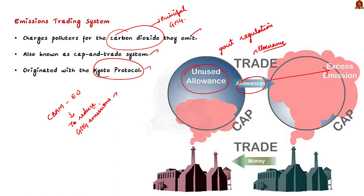This baseline level of pollution will be reduced annually by the European Union countries. Currently, the price of those permits is nearly $60 per tonne. This gives European companies a strong incentive to cut greenhouse gas emissions. This is about the Emissions Trading System.